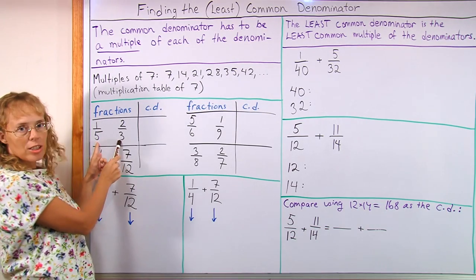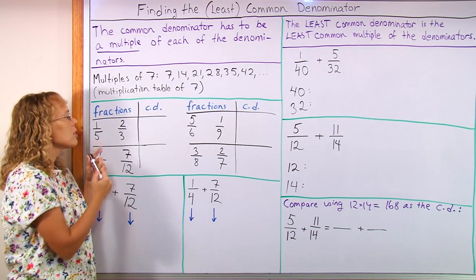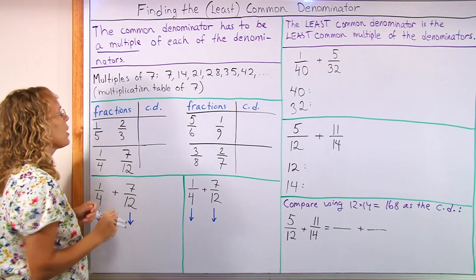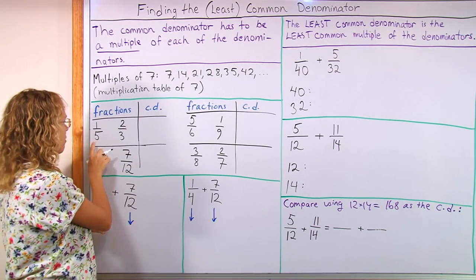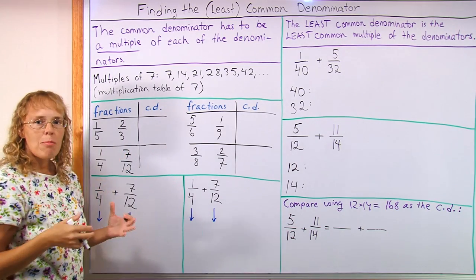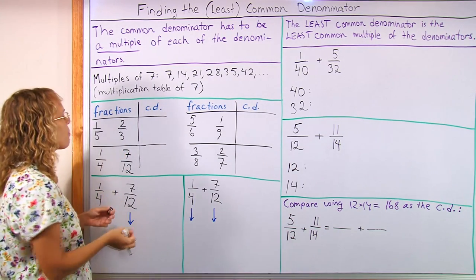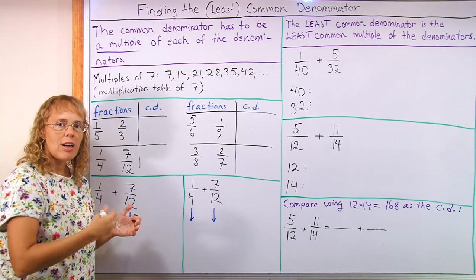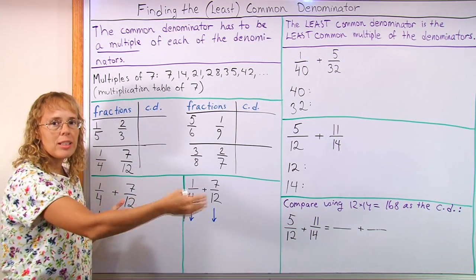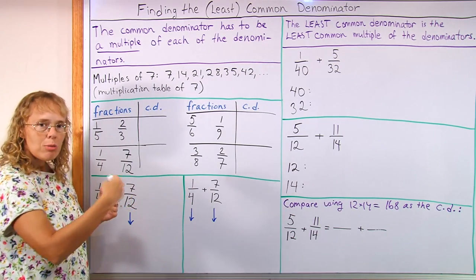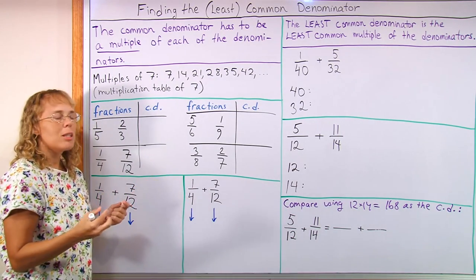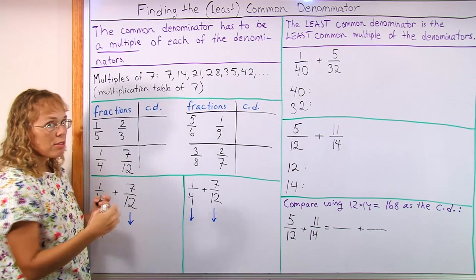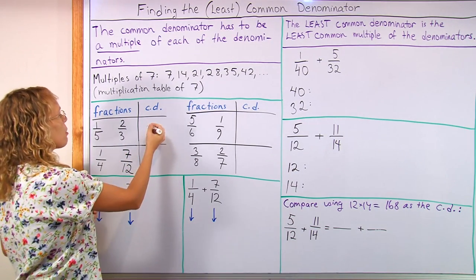For example, if we have these two fractions to add, 1/5 and 2/3, look at the denominators, 5 and 3. Think of the multiplication table of 5 and of 3, and find a number that's in both of those tables. For example, like this. Multiplication table of 5 goes like 5, 10, 15, 20, 25. Those are multiples of 5. And which one of those numbers, if any, but there will be one number at least, is also in the multiplication table of 3. And so that's how we will find 15.